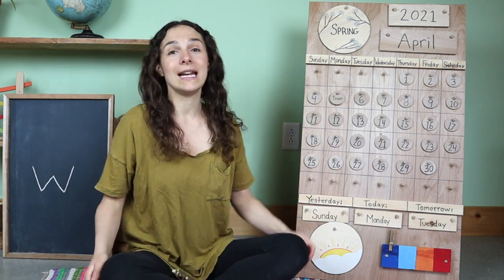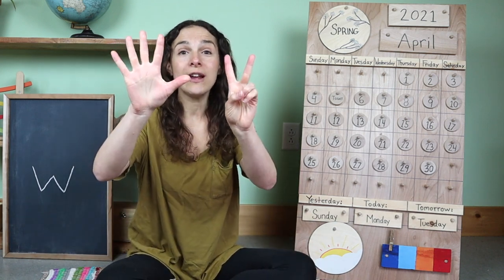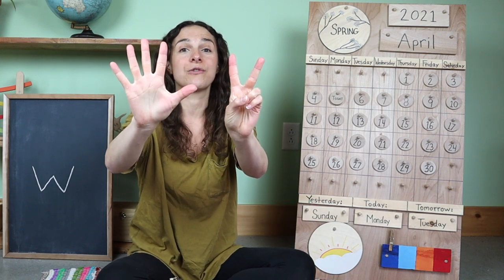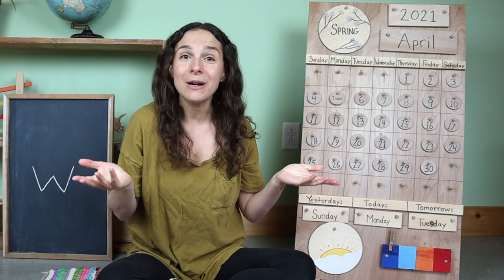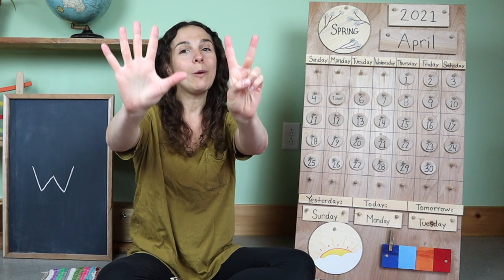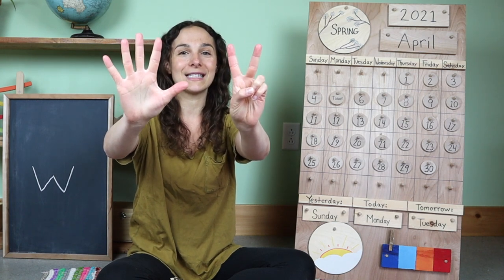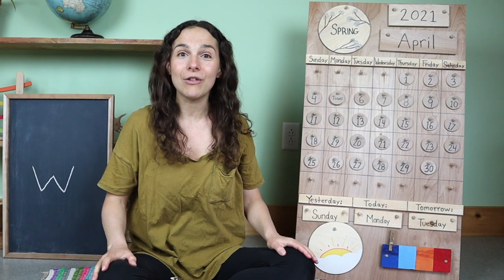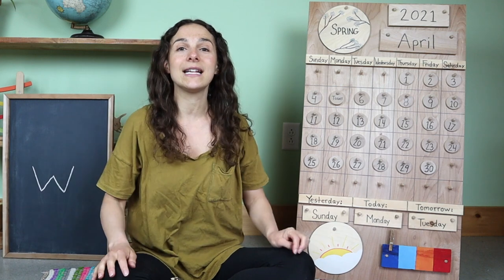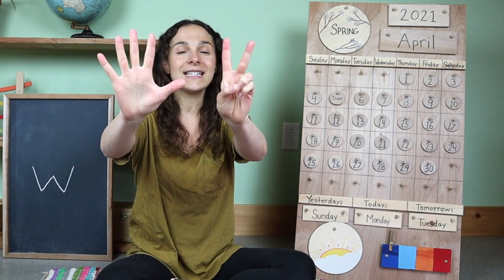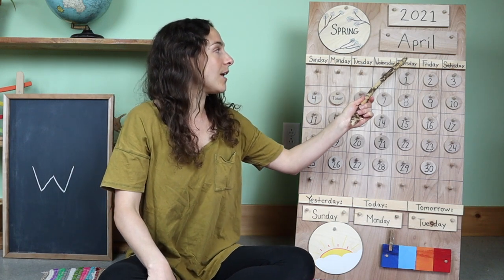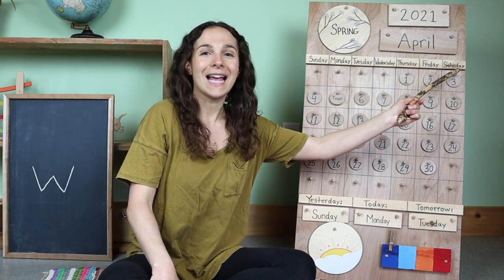Now I need you to add two more fingers to those five fingers like this. We need to have seven fingers for the next song because we are going to sing the days of the week. And because we have seven days in our week, we hold up seven fingers like this. You can sing along with me if you know the words. There are seven days, there are seven days, there are seven days in a week. Sunday, Monday, Tuesday, Wednesday, Thursday, Friday, Saturday.